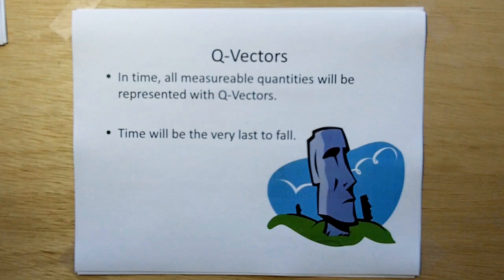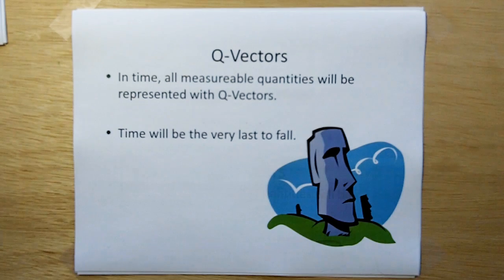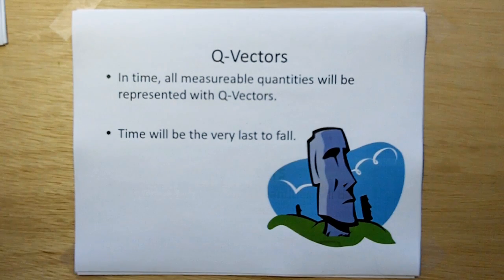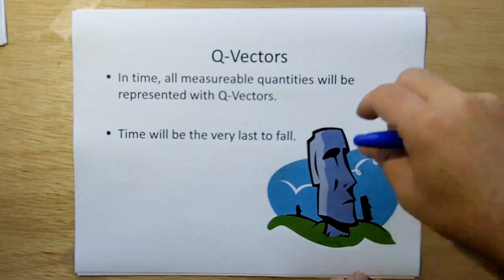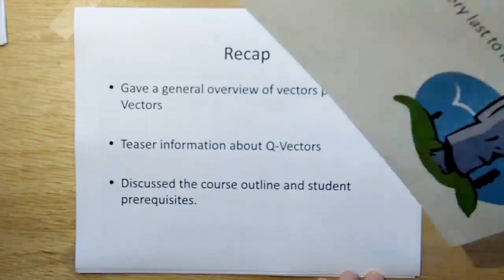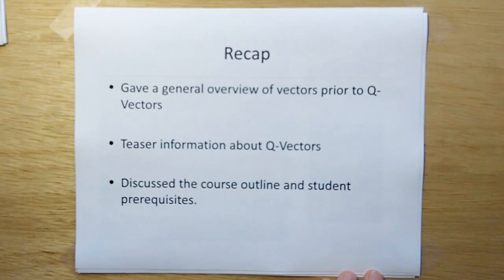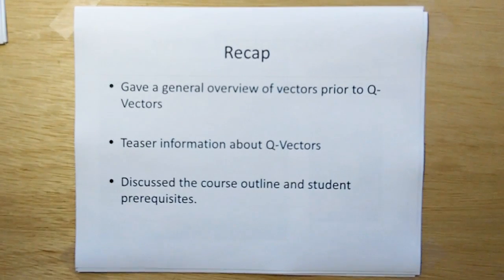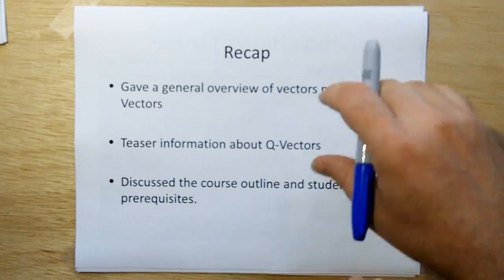So Q-vectors. In time, as the ethereal mechanics progresses, all measurable quantities will be represented with Q-vectors. And time will be the very last to fall. Okay, recap. I gave a general overview of vectors prior to Q-vectors. Gave you some teaser information about Q-vectors. And I discussed the course outline and the student prerequisites.